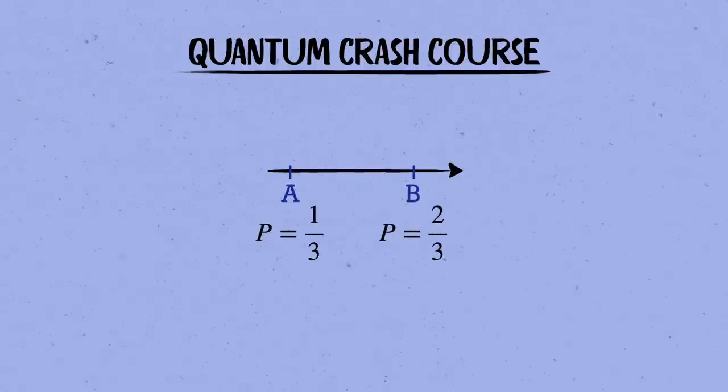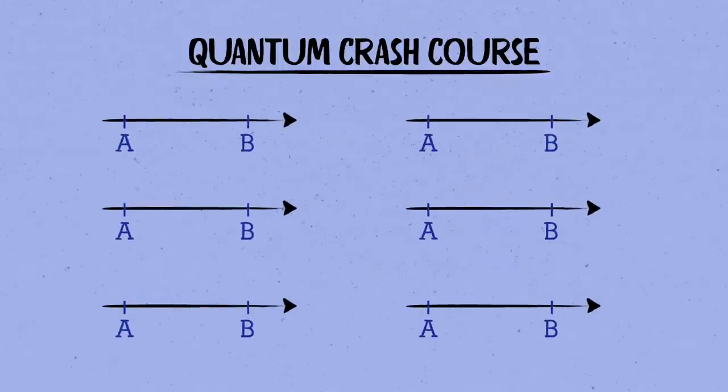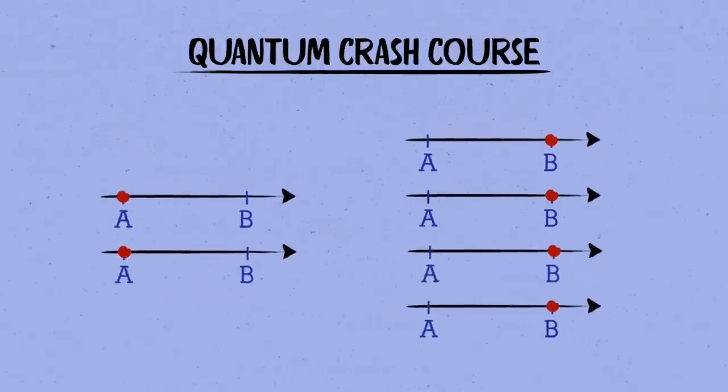For example, the particle might be in a state where it'll be found at point a with probability one-third, or at point b with probability two-thirds. We don't know which value we'll get until we make the measurement. And before we do measure, the particle isn't really localized at one or the other. If we set up a bunch of identical copies of the system side by side, each in this particular state psi, and then measure the position of the particle in each, a third of the time you'll find it at a, and two-thirds of the time you'll find it at b. That's profoundly bizarre.